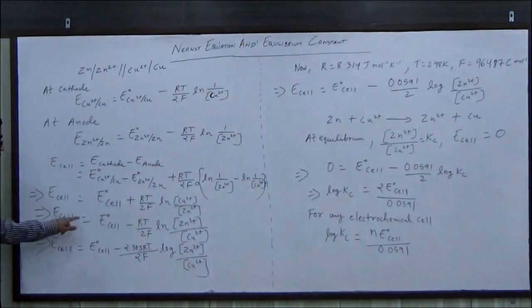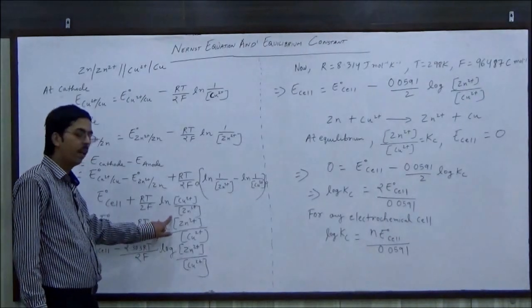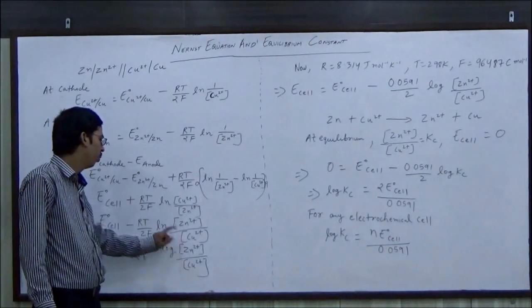Once again, E cell is equal to E0 cell minus RT by 2F ln concentration of Zn2+ upon concentration of Cu2+.